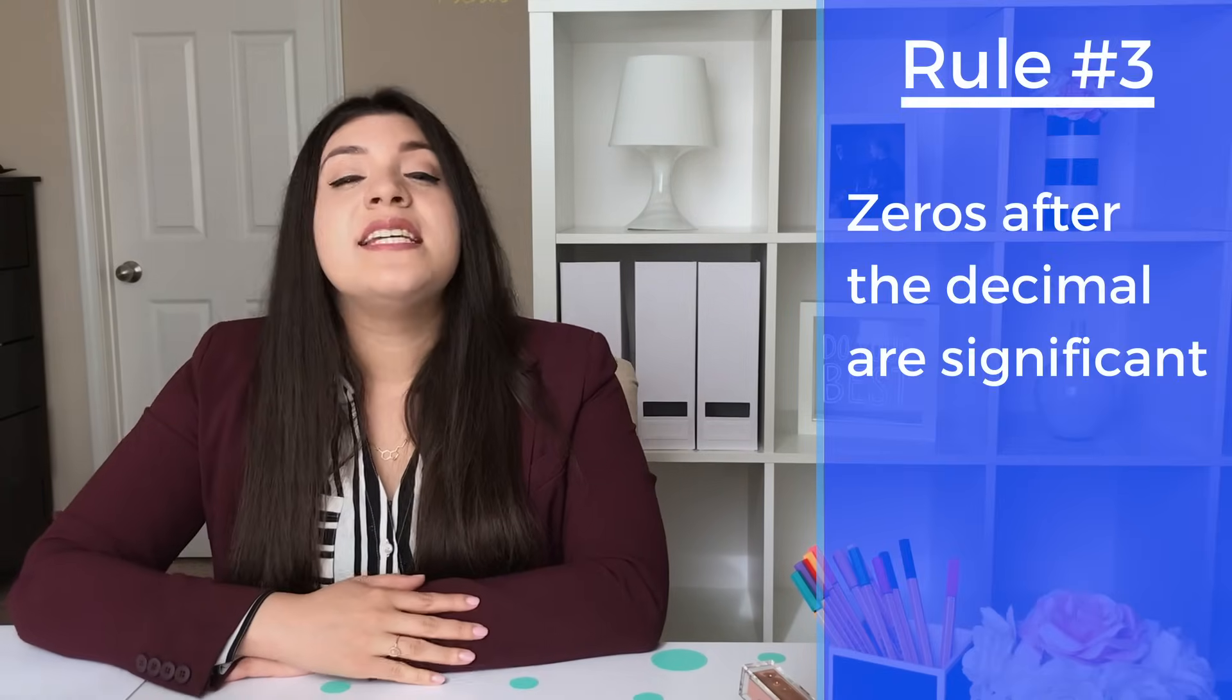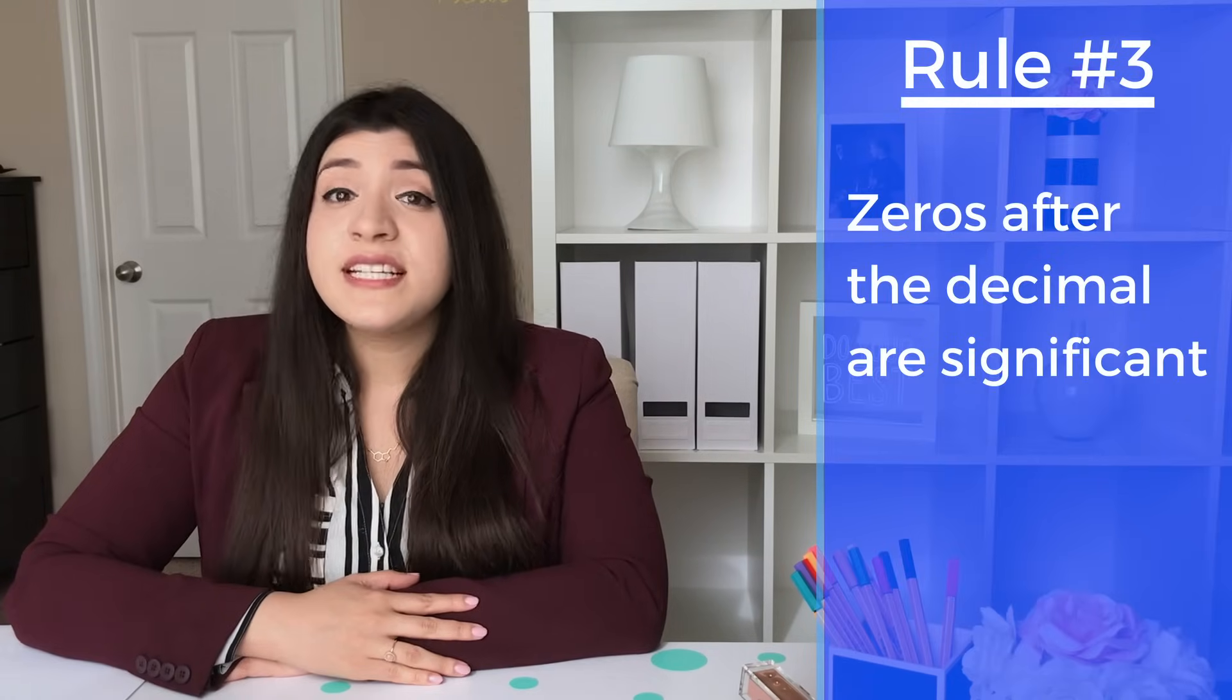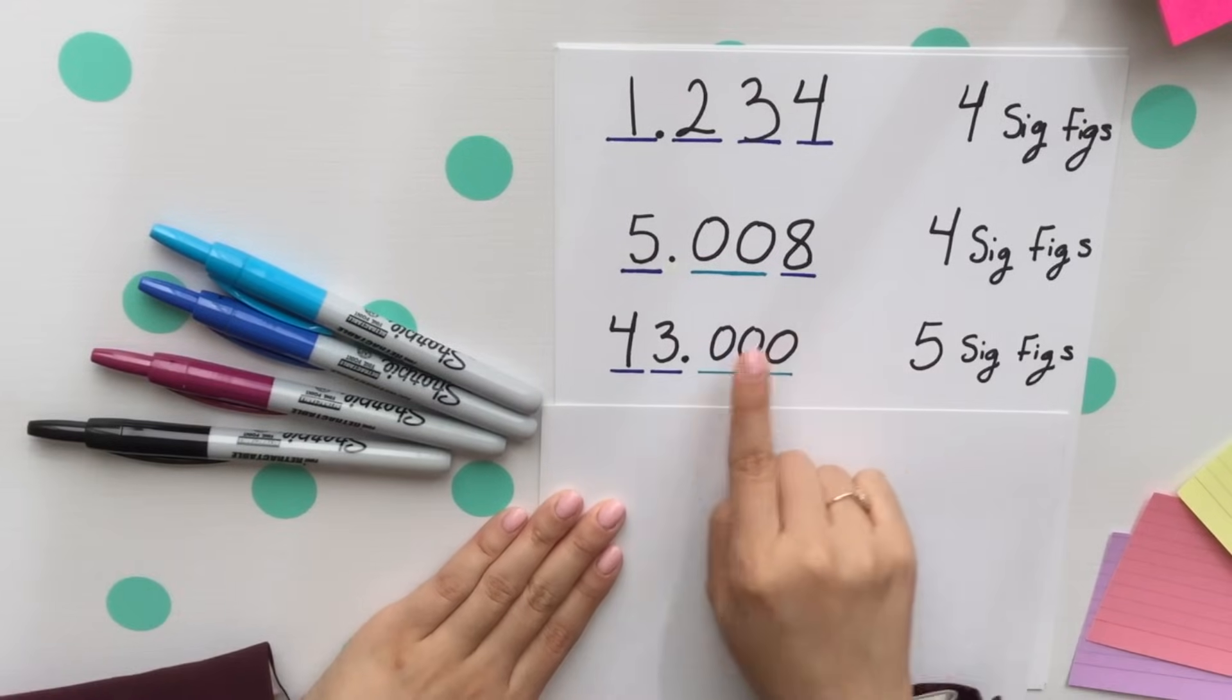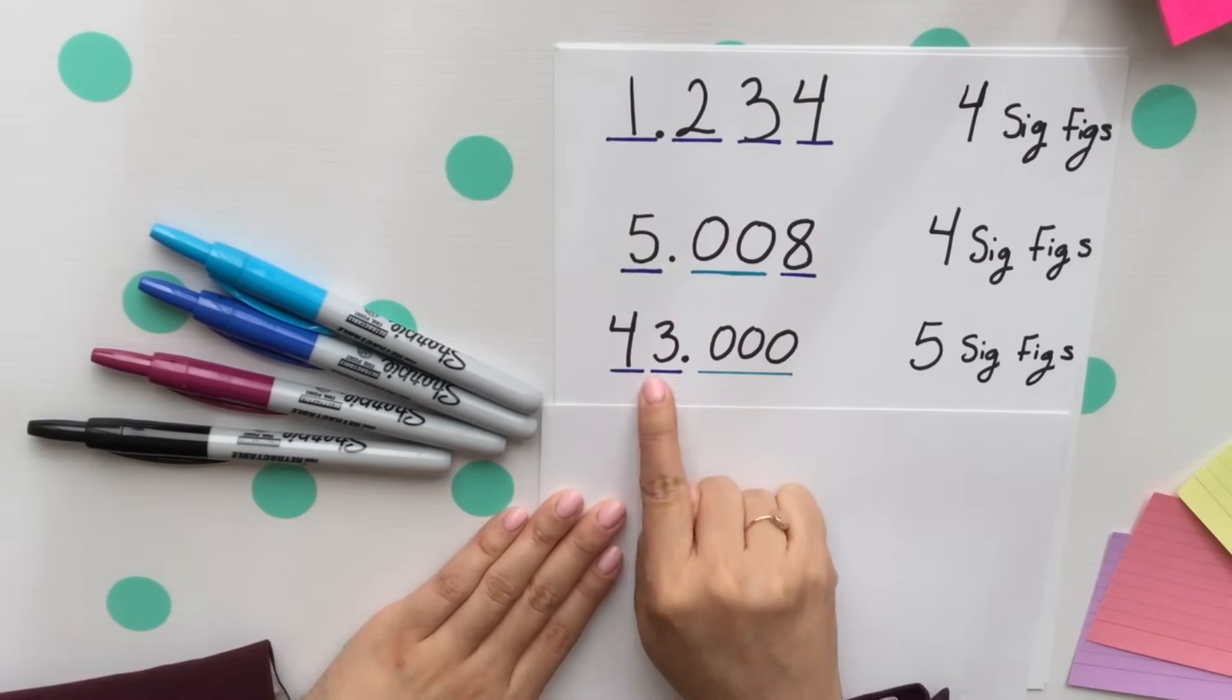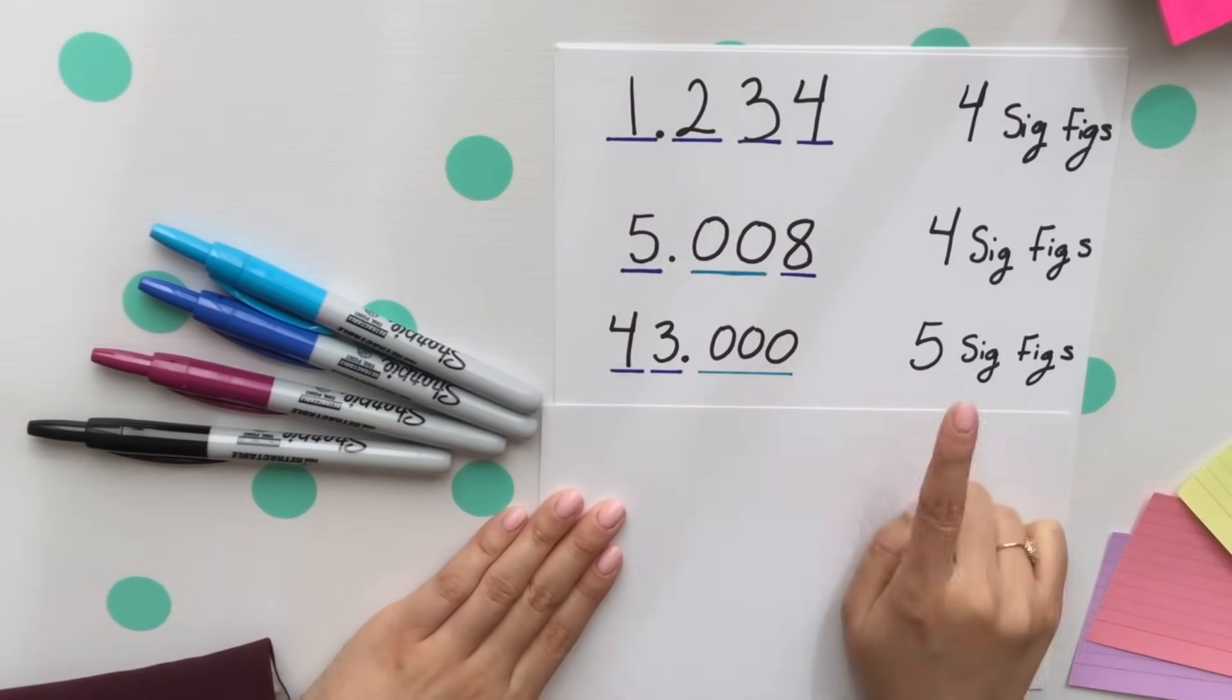Rule number three, zeros after the decimal are significant. These three zeros are after that decimal place, so every single one of these digits is significant.